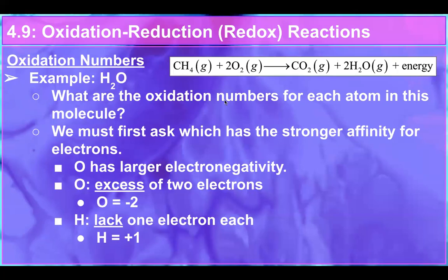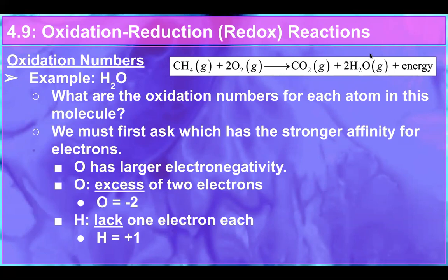Let's figure out the oxidation numbers for the combustion of methane. For O₂, we know the oxidation number is zero — nice and easy. For water, oxygen is almost always negative two, and this is not an exception. So oxygen is negative two, and since the molecule must sum to zero, the two hydrogens must add up to positive two, making each hydrogen plus one. That makes sense because hydrogen in a covalent compound is plus one. Oxygen with negative two means it holds the two electrons from the covalent bonds with hydrogen closer to itself, while the hydrogens lack one electron each, making them positively charged.